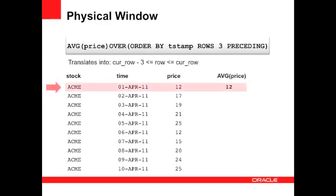For the first row, the calculation is relatively simple: price for row one, divide it by one. For the next row, our window's expanded to two rows. So we add the price from row one to the price in row two, divide by two, and we get the average.